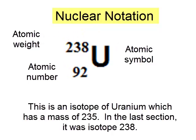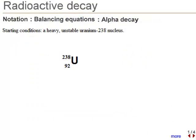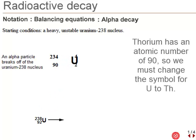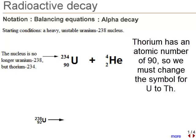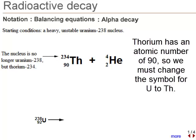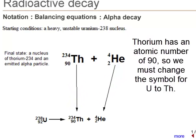If you follow through these steps, you can see how nuclear reactions are written. As an alpha particle is emitted, its atomic number 2 and mass 4 must be subtracted from uranium. Uranium is transmutated to thorium.